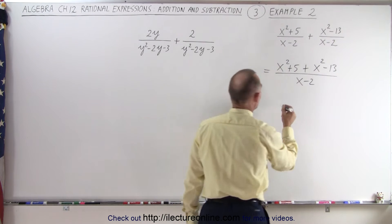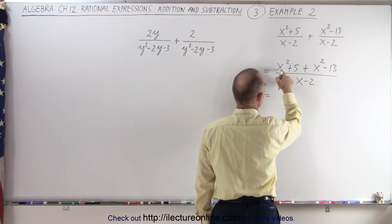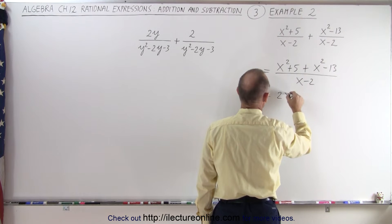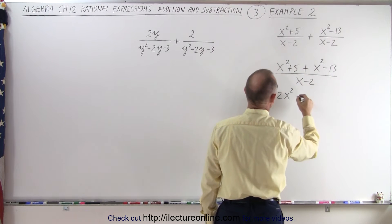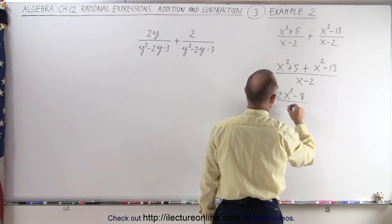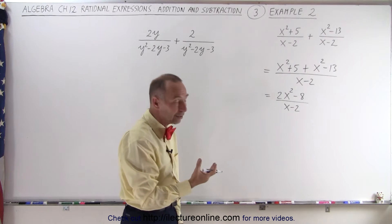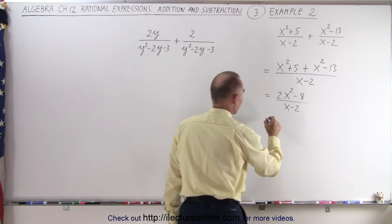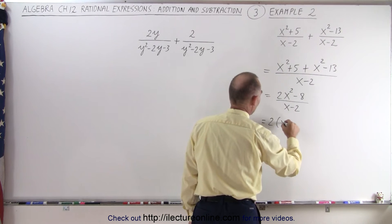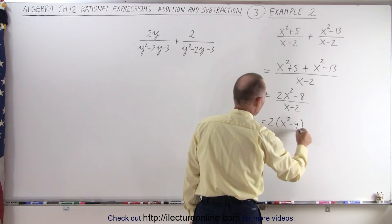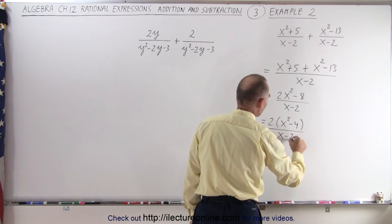Now we simplify the numerator by collecting common terms. So x squared plus x squared is 2x squared and 5 minus 13 is minus 8 all over x minus 2. So now the next thing is to factor what's in the numerator and simplify as much as possible. So this is equal to 2 times x squared minus 4 over x minus 2.